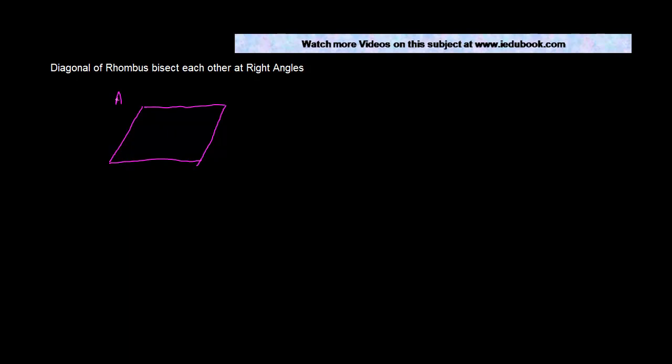Let us call this as A, B, C and D. Let us draw the diagonals. Let the point of intersection be called I.